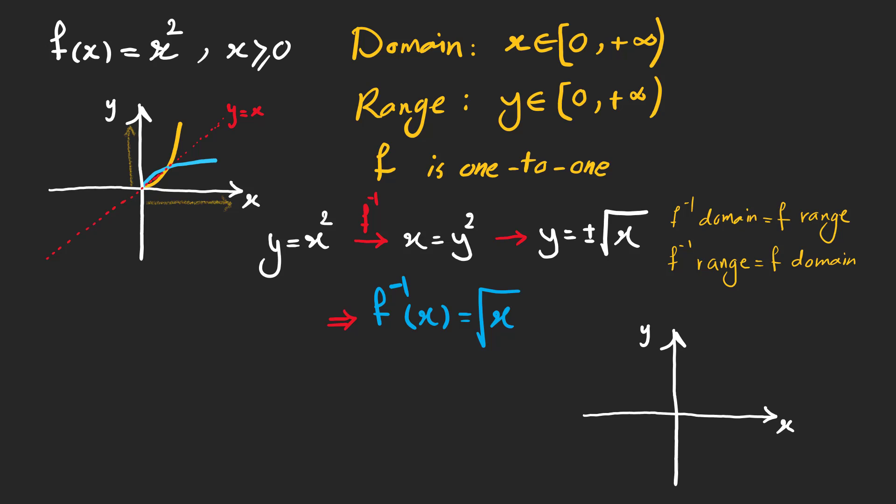Pay attention that f of x and its inverse are symmetrical with respect to line y equals x. So, for every one-to-one graph, the inverse graph is its mirrored one with respect to line y equals x. To find the intersection points, we can solve this equation. As you can see, we have two intersection points at zero and one.